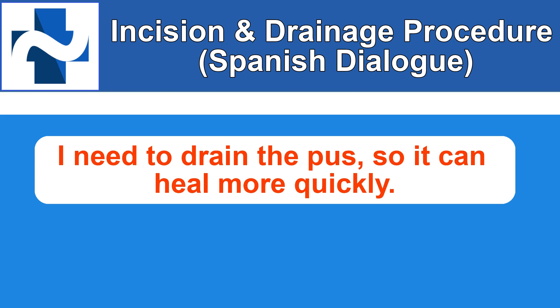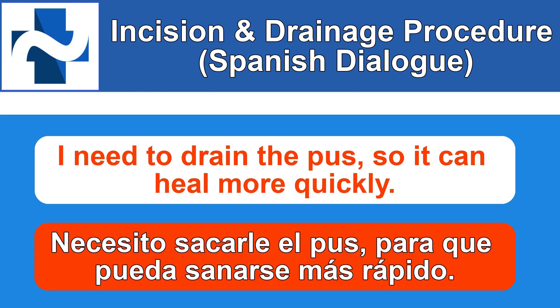Next phrase: I need to drain the pus so it can heal more quickly — in Spanish this sounds more like 'I need to take out the pus.' Necesito sacarle el pus para que pueda sanarse más rápido. Necesito sacarle el pus para que pueda sanarse más rápido. Quick grammar note: we're using subjunctive a few times in this dialogue, and this is one example — 'para que pueda' is where you'd use subjunctive.